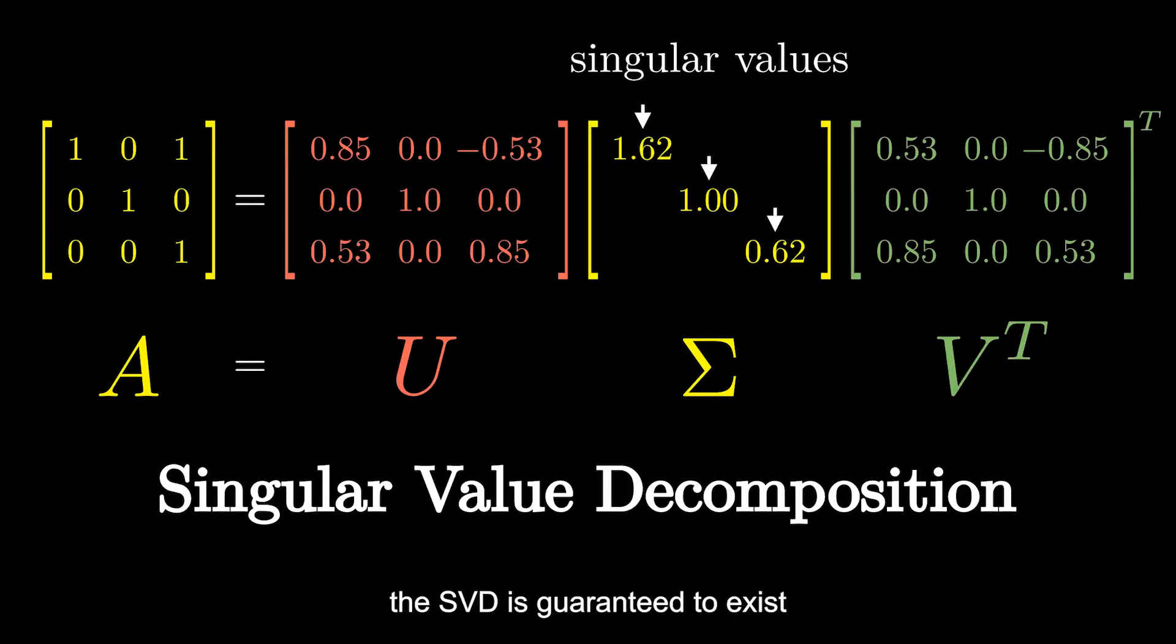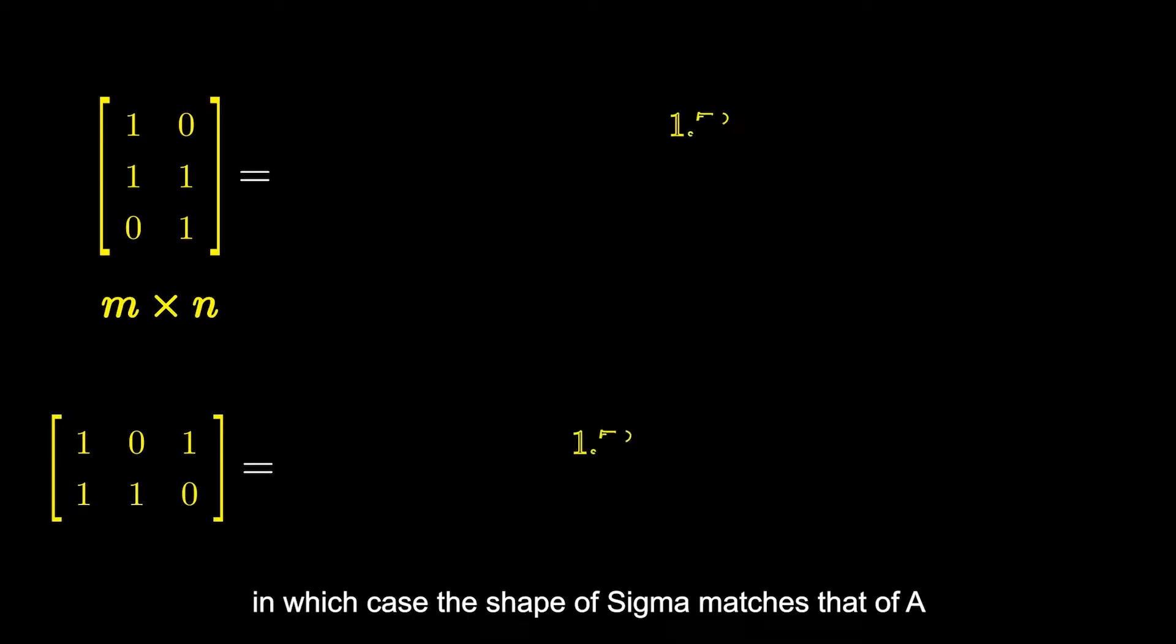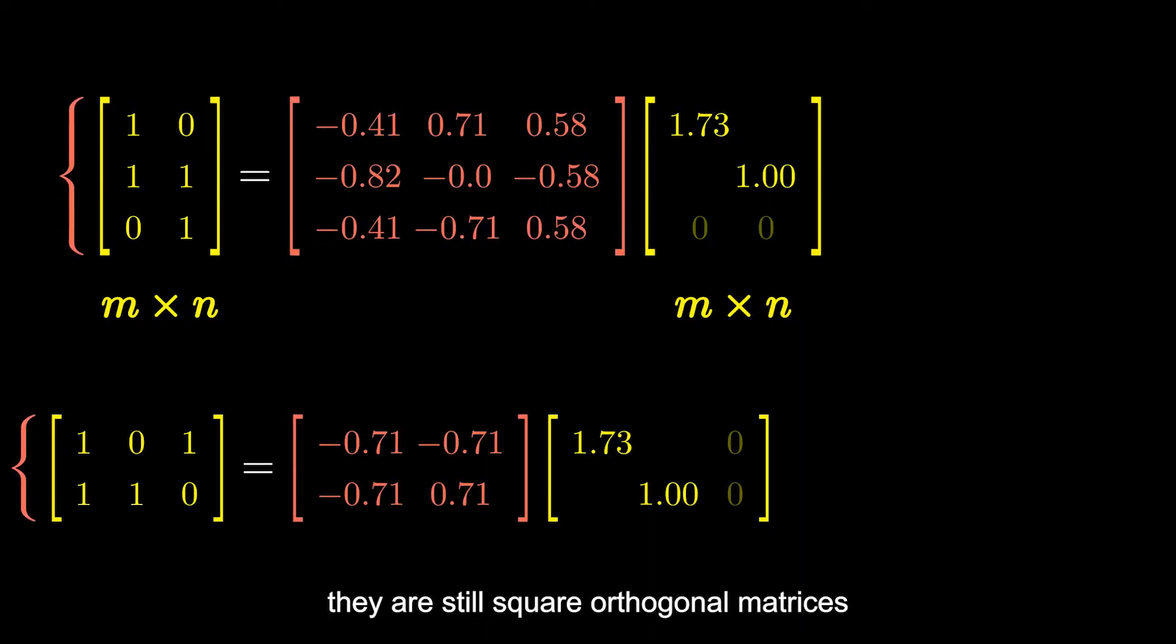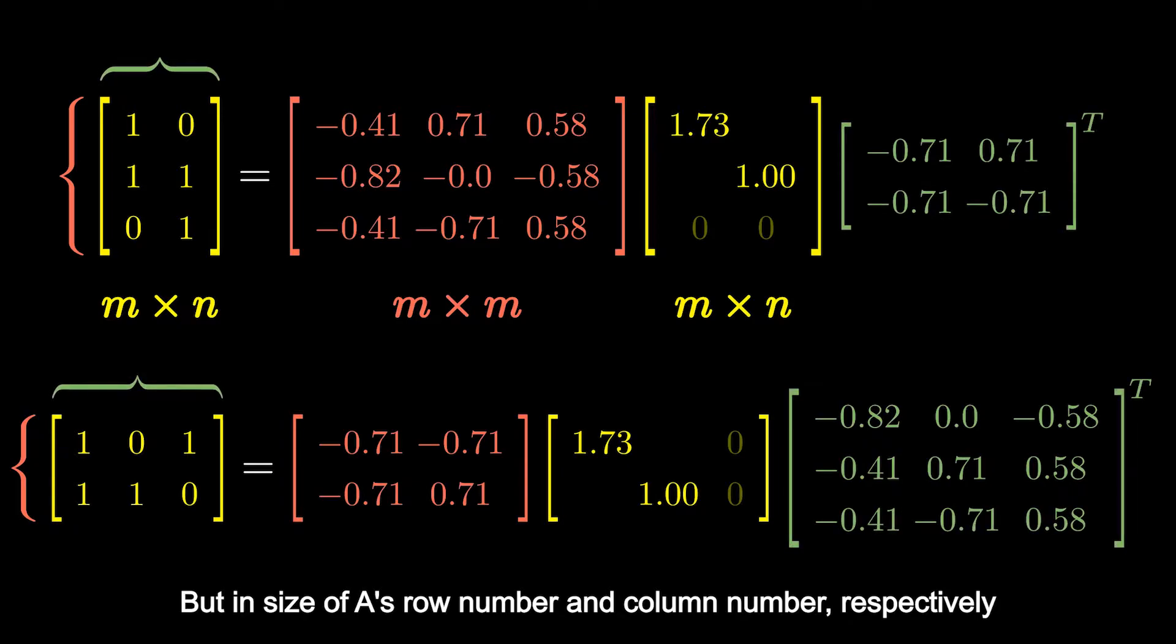The SVD is guaranteed to exist, even though A is not square. In which case, the shape of sigma matches that of A. And you can still interpret it as diagonal, as we use zeros to fill the extra parts. In terms of U and V, they are still square orthogonal matrices, but in size of A's row number and column number, respectively.